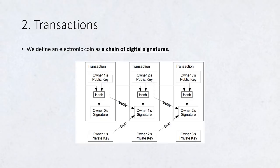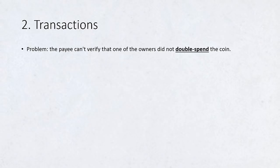Transactions. We define an electronic coin as a chain of digital signatures. Each owner transfers the coin to the next by digitally signing a hash of the previous transaction and the public key of the next owner and adding these to the end of the coin. A payee can verify the signatures to verify the chain of ownership. The problem of course is the payee can't verify that one of the owners did not double spend the coin.